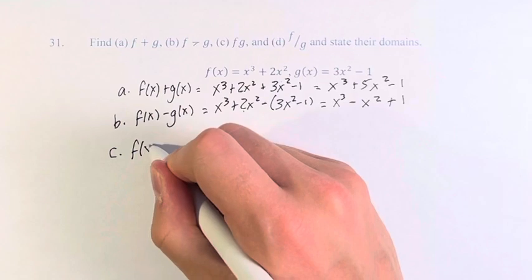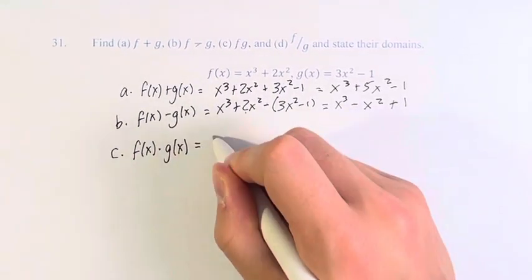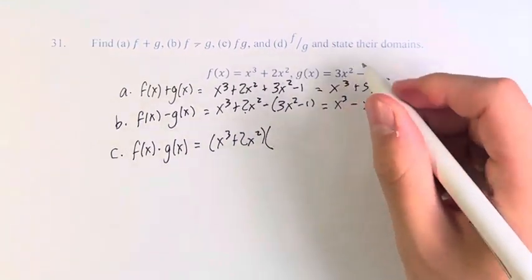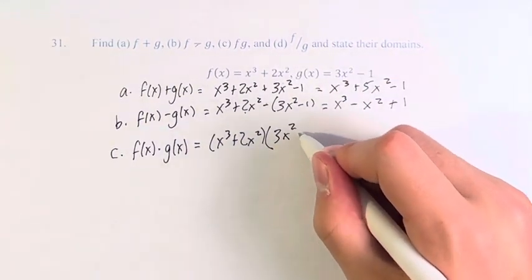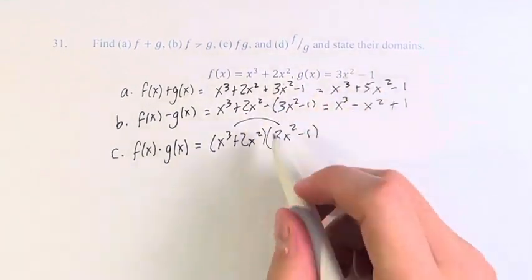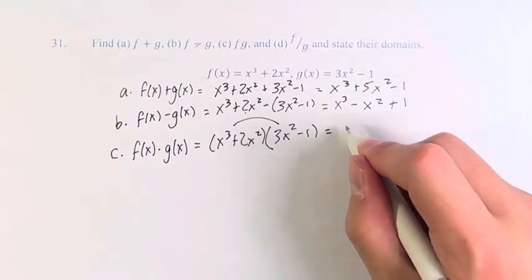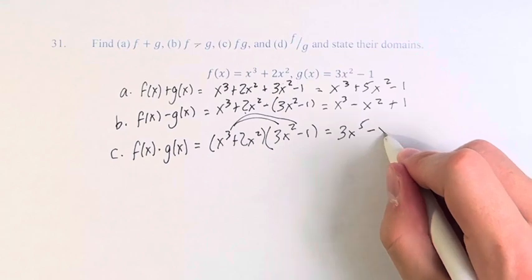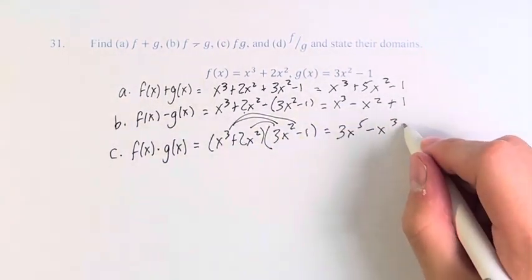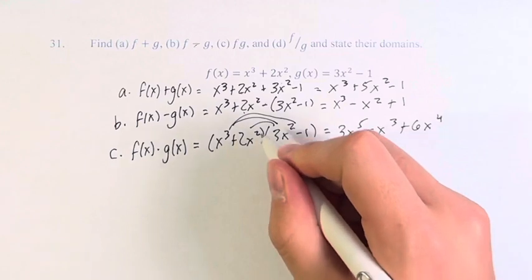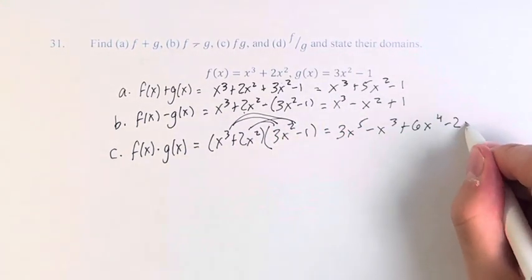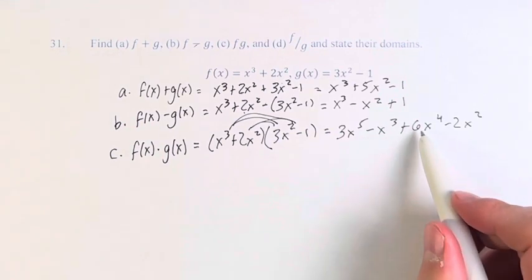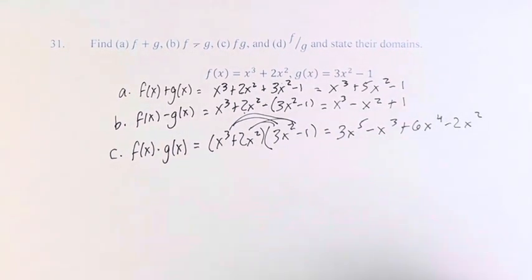f times g, so f of x times g of x. f of x is x cubed plus 2x squared, times g of x, 3x squared minus 1. Doing this distribution, 3x squared times x cubed equals 3x to the 5th minus 1x cubed plus 2 times 3, 6x to the 4th minus 1, 2x squared. So 3x to the 5th minus x cubed plus 6x to the 4th minus 2x squared is f times g.